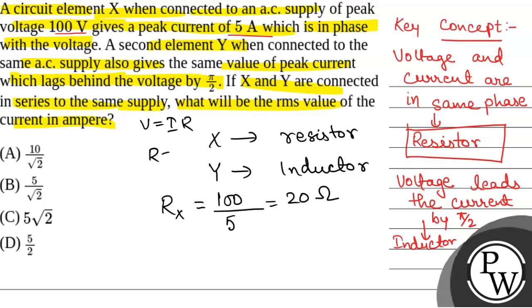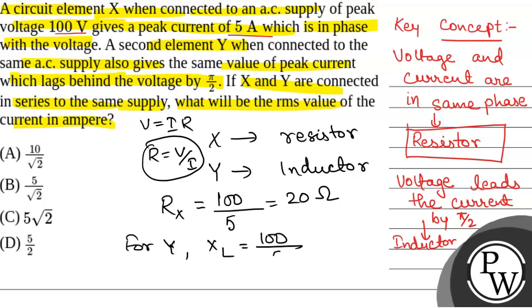Because we know that V equals I times R, so R will be equal to V by I, where V is the voltage and I is the current. So for element X, which is a resistor, the resistance is 20 ohm. Similarly, for circuit element Y, which is an inductor, the inductive reactance X_L will also be equal to peak voltage divided by peak current, which gives 20 ohm as well.